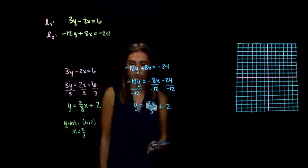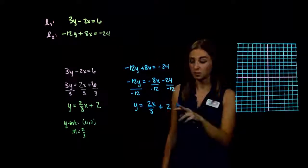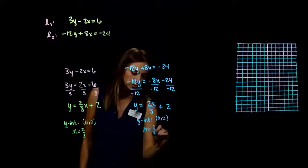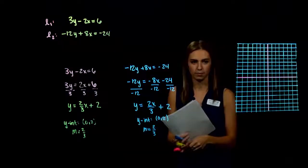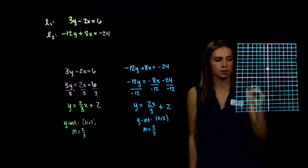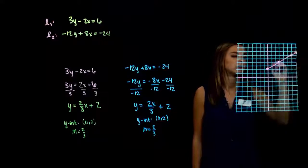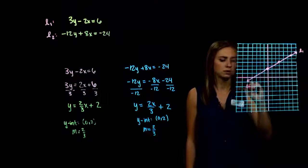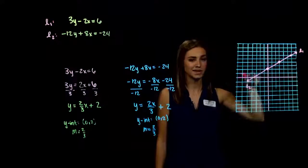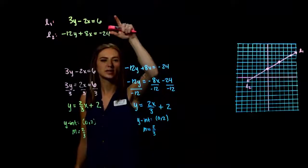Comparing the two simplified equations, they are exactly the same — just line 2 was scaled by a factor of negative 4 from line 1. So graphing is essentially graphing one equation: y-intercept at (0, 2), slope up 2 over 3. Since both lines are identical, any point on line 1 also satisfies line 2. They sit right on top of each other.